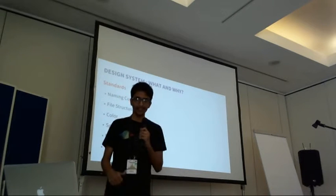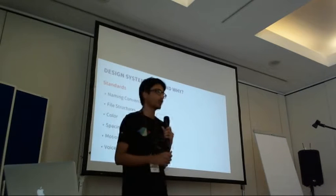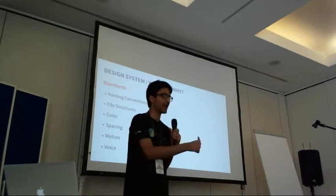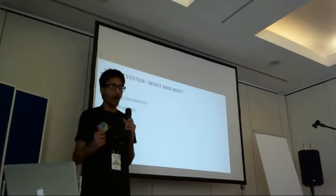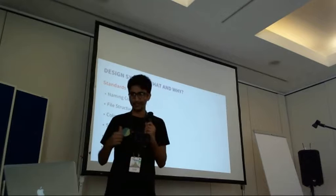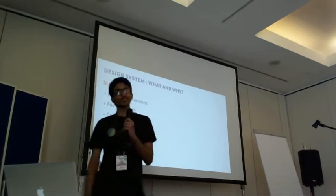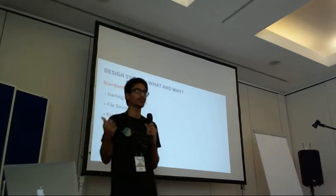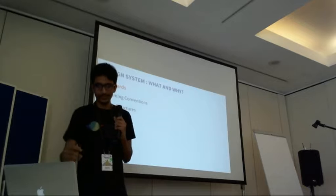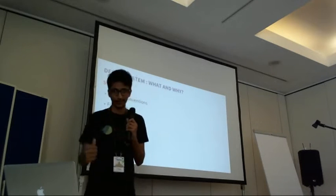Going deeper into standards: you need to define the naming convention — when writing code, are you using kebab case or camel case, and what are the variable names in CSS? Then there is file structure — where do you put the images, in the static folder? Everything should be consistent throughout the theme. Then there are things like color, spacing, motion, and lines, which I'll come back to later.